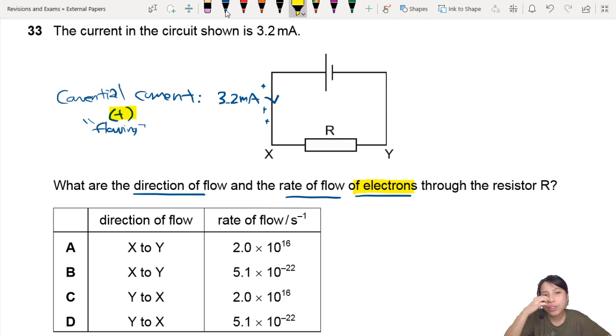Remember, I said this is conventional current, so once upon a time, scientists thought that the positive charges were moving, but there's no such thing. So it's supposed to be electrons which actually move in the other direction. These are all the negative charges moving. So moving from Y to X, electrons are moving there. So that is Y to X. A and B is out.